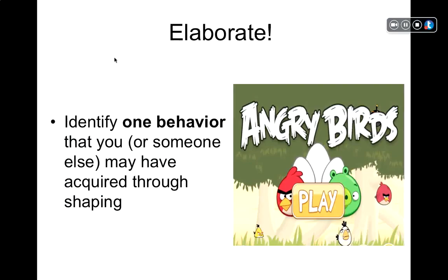Take a minute to identify a behavior you or someone else may have acquired through shaping. For example, consider video games like Angry Birds. Playing a video game is essentially shaping your behavior — the more points you earn for a particular behavior, the more that behavior is positively reinforced, and eventually your behavior is shaped so you engage in those behaviors that gain the maximum points. Coming up with your own examples helps encode this into memory for better recall.